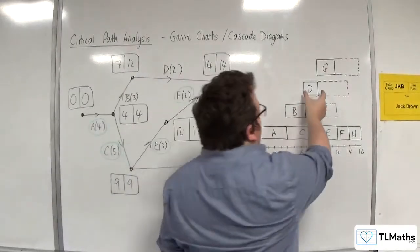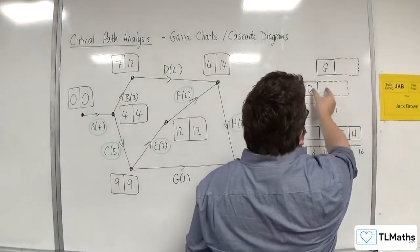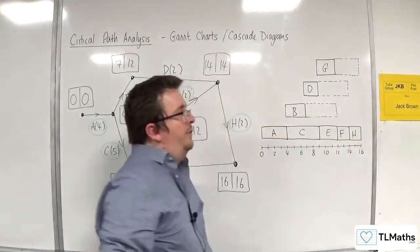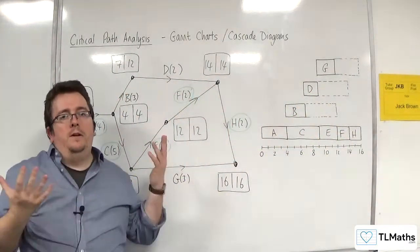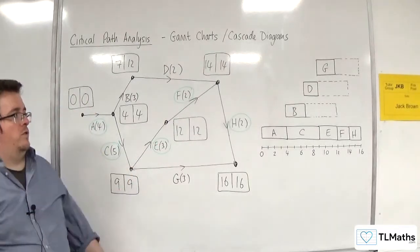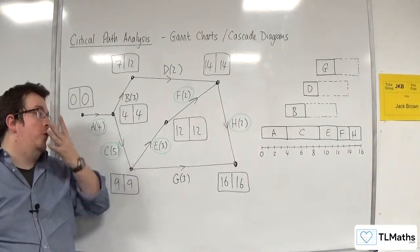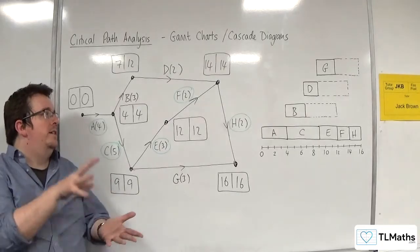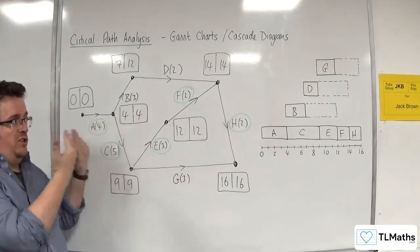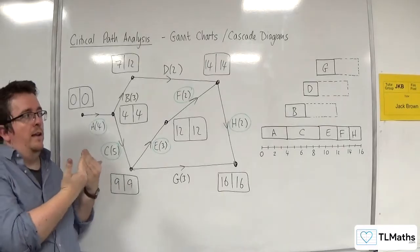The convention is that you draw them at their very earliest start time. So you don't draw D over here, but you push them all to the left-hand side. That's the convention. You could draw it in a different way, but quite often the question will identify that they should start from their earliest event time.